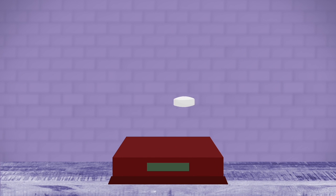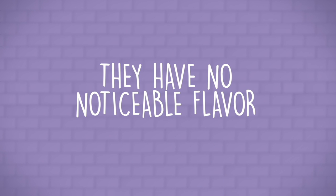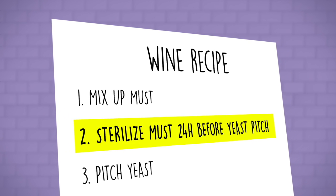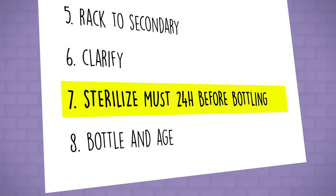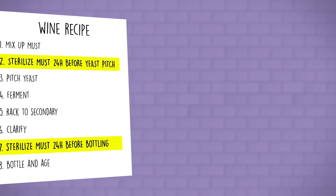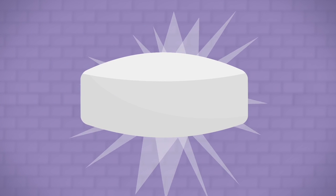Campden tablets allow the home brewer to measure small quantities of potassium metabisulfite easily. They have no noticeable flavor. Many homebrew recipes include sterilizing the must with Campden 24 hours before pitching the yeast, then again just before bottling. This step is not necessarily required, but it is a useful control mechanism for the home brewer who is learning the best practices of proper sanitization.